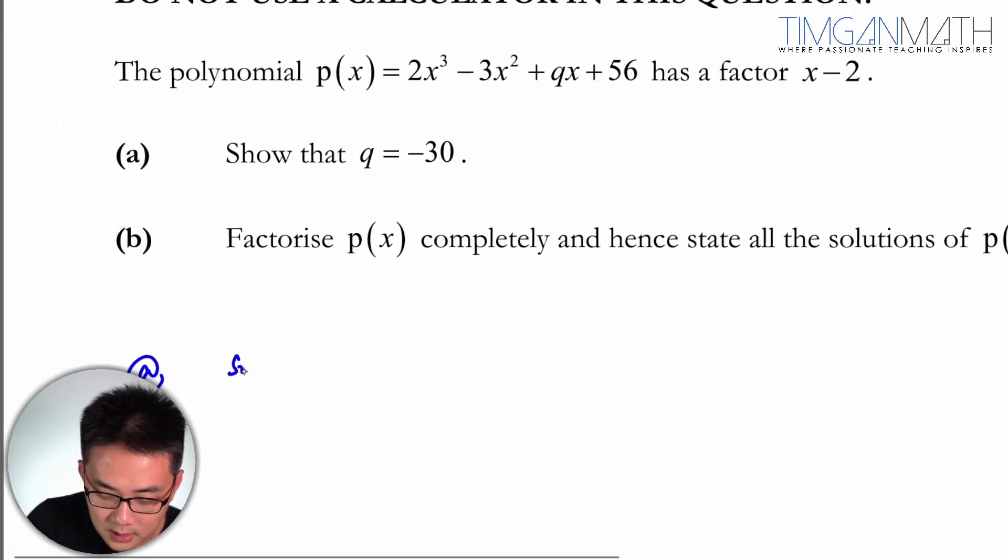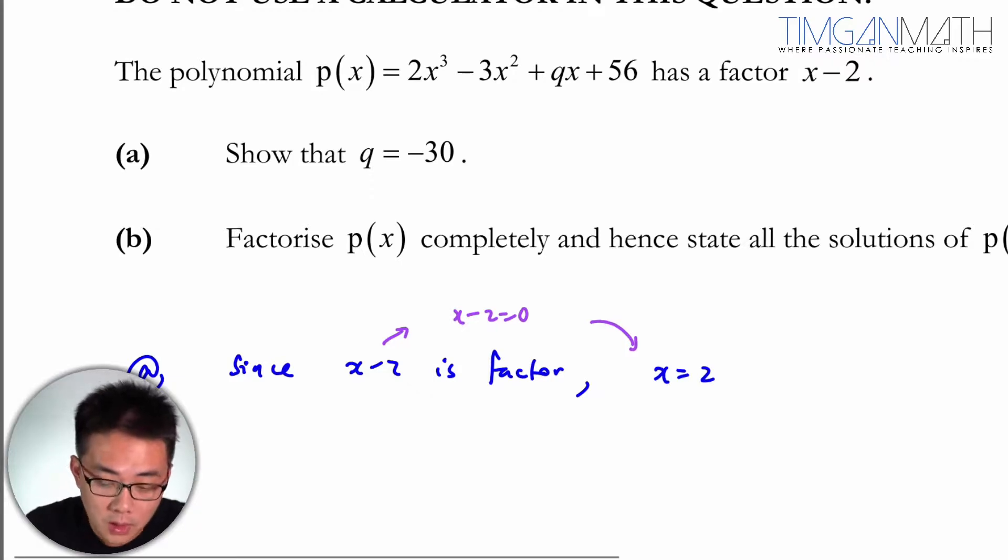So since x minus 2 is a factor, by factor theorem we know that x equals 2, or rather you just let x minus 2 equals 0 and solve for x. So x equals 2 is the root. So we could say that this is a root, right?